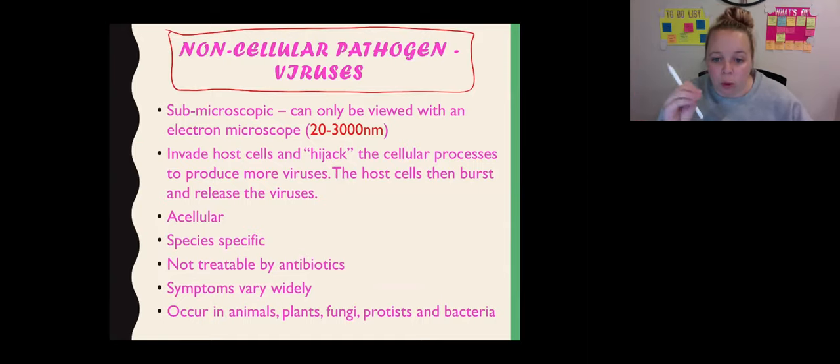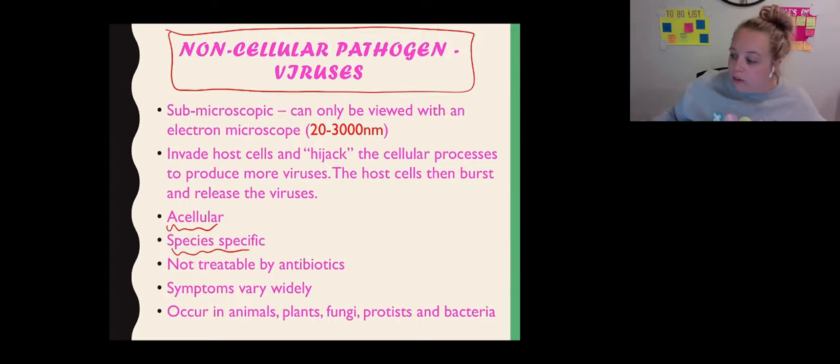The biggest distinction between the non-cellular and your cellular pathogens is that these guys are much smaller. Think about it, if you've got a cell you're going to be quite large. If you are not even a cell, if you are a virus, then you have even less space to take up, so you're very tiny. These guys are acellular. They are usually species specific, so a virus that infects a human won't infect your dog.